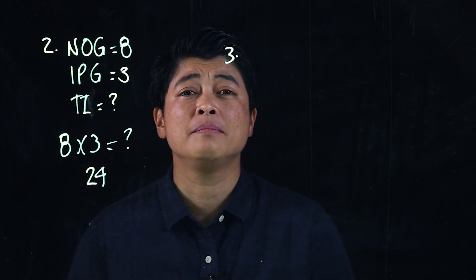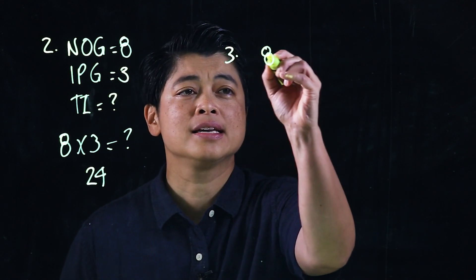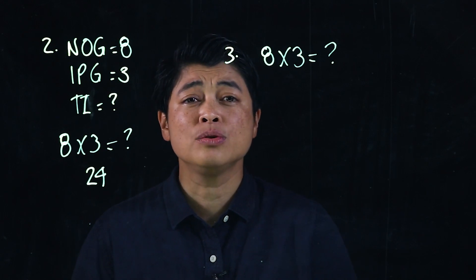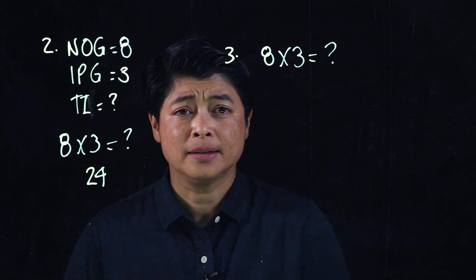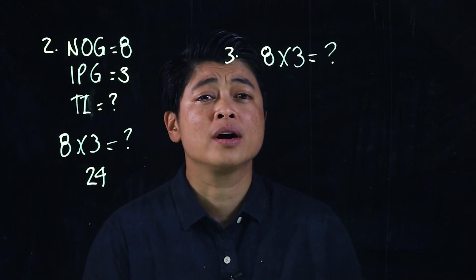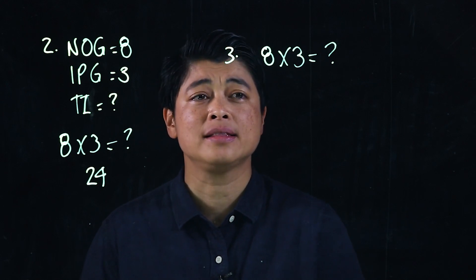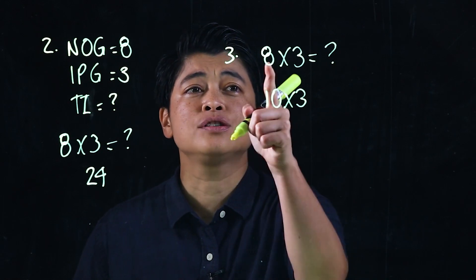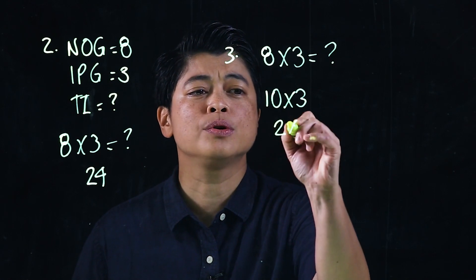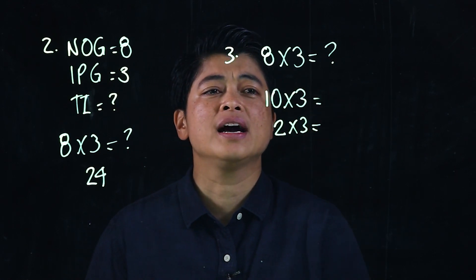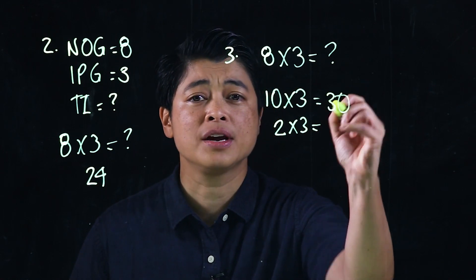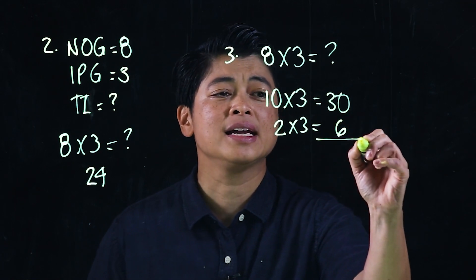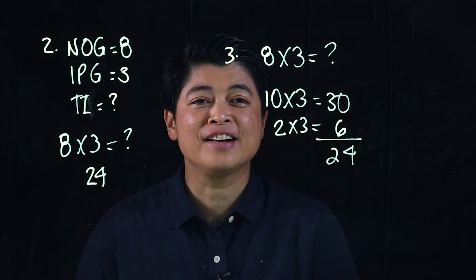The next exercise, number three, I feel is counterproductive, but it is part of the lesson so it must be taught. The lesson asks you to find the number closest to eight that is either a ten or a five — clearly ten is closest. So you start with ten times three, which is thirty, and since ten is two more than eight, you remove two groups of three, which is six. That gives you thirty minus six, equals twenty-four.